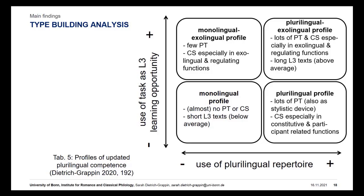I thus found four types of updated profiles of plurilingual competence, depending on the interpretation of the communicative situation with which the learners came up. For the distinction between these types, the frequency of production transfer and the type of code switching, as well as L3 text length, were decisive. The plurilingual exolingual profile is particularly interesting — learners here made use of production transfer and code switching in exolingual and regulating functions.